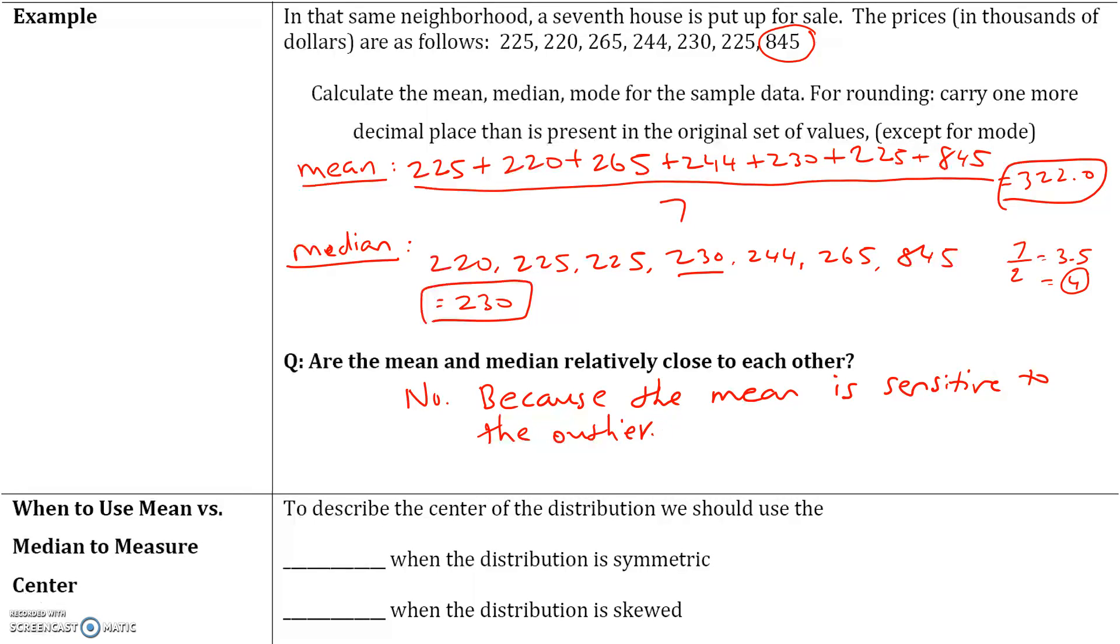Why? Because the mean is sensitive and thus affected by the outlier. The outlier pulls the mean towards it. In this particular neighborhood, if we just looked at the mean, the average house costs $322,000, which is not true because most houses are in the 200,000s. This outlier takes the mean value and puts it at 322, which is not the case. The median is a much better indicator of the center. The median is 230, which is about right. So 230 is much more accurate than 322. When there's an outlier or when your distribution is skewed, the median is a much better indicator of center than the mean.